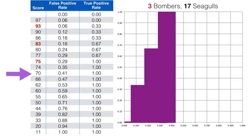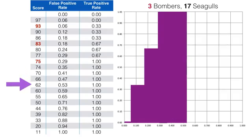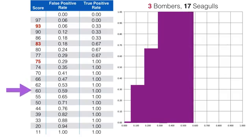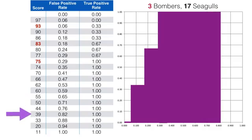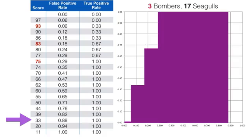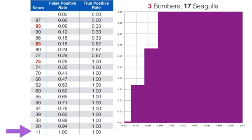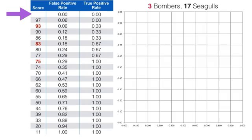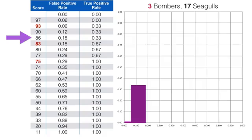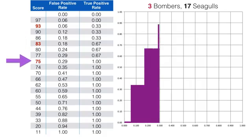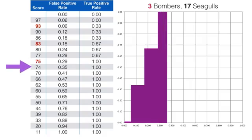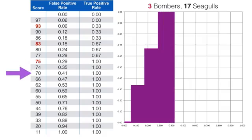For now, it's enough to understand that keeping the scoring method constant but changing the threshold leads to different values for the confusion matrix. The ROC curve is drawn by identifying for a given threshold its false positive rate, so that would be false positives at the given threshold as a percentage of total seagulls, and its true positive rate, true positives at the same threshold as a percentage of total bombers, then plotting a point where the x-axis is the false positive rate and the y-axis is the true positive rate.